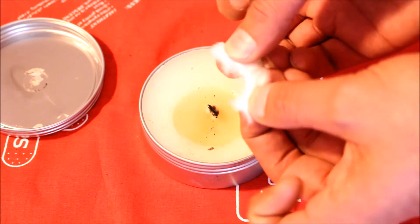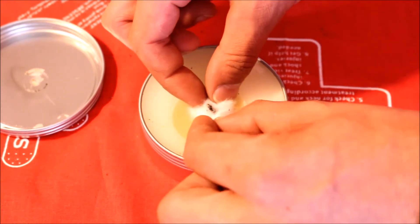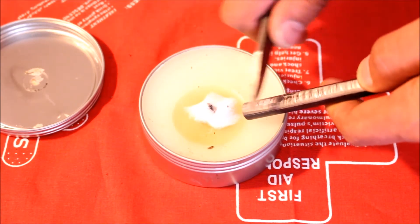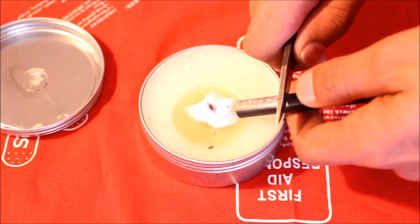And you just put it right around that wick, then take your ferro rod and throw some sparks on it and see if it lights up.